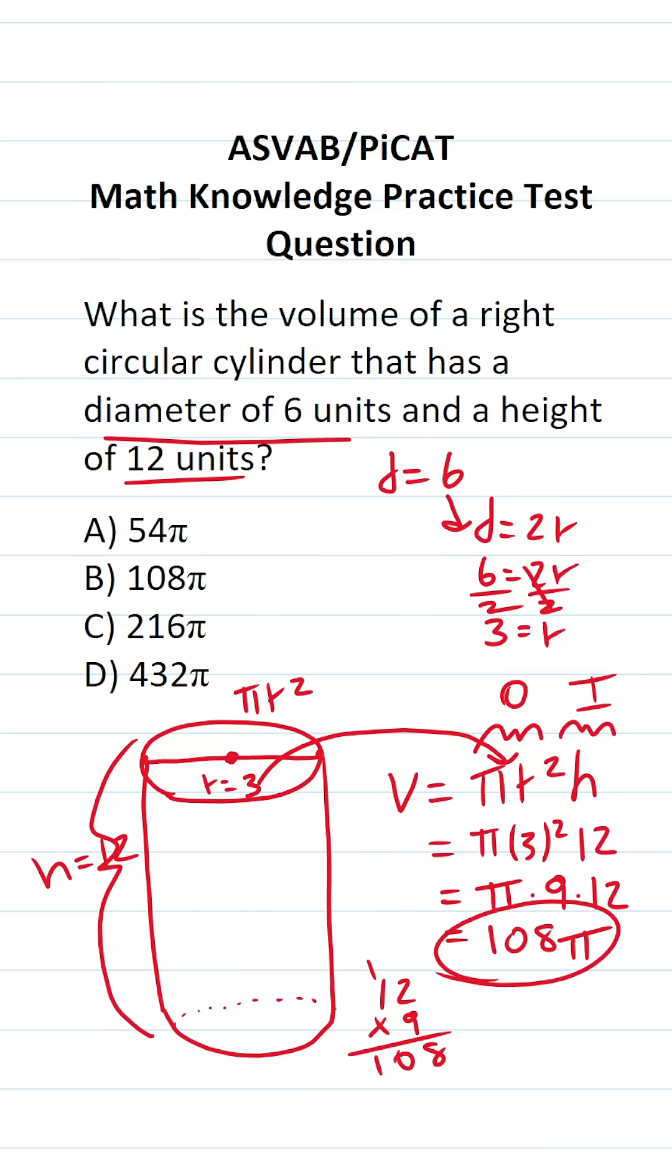In other words, the volume of this right circular cylinder is B, 108 pi.